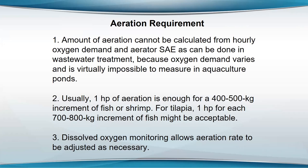What you can do is figure out how many fish you want to produce, estimate the biomass at the end of the crop, and put in about one horsepower of aeration for every 400 or 500 kilograms of fish or shrimp you expect to produce. They won't need all that aeration throughout the season, and if you run all those aerators from the beginning you're going to waste a lot of electricity. So dissolved oxygen monitoring allows aeration rate and time of day of aeration to be adjusted.